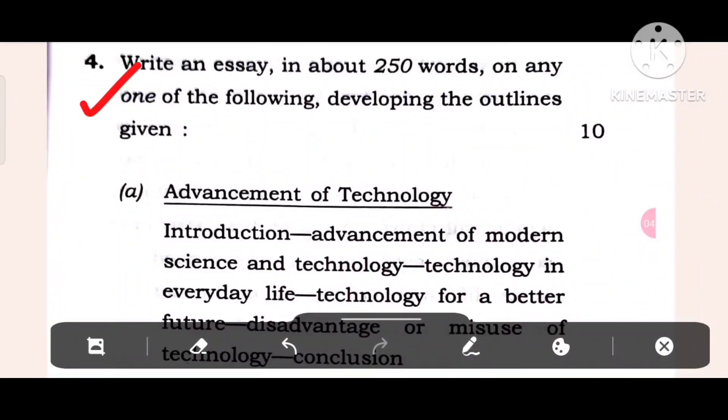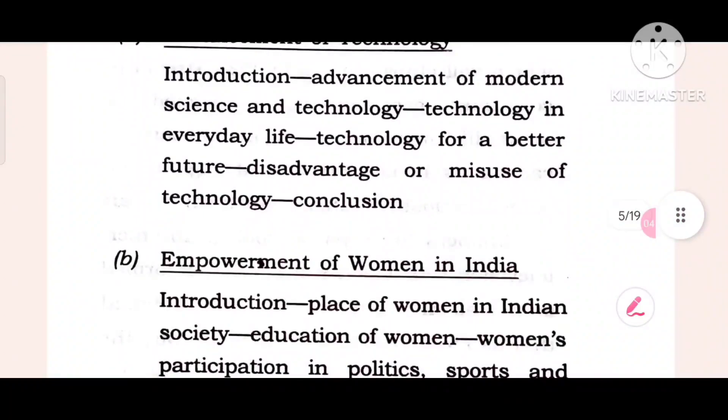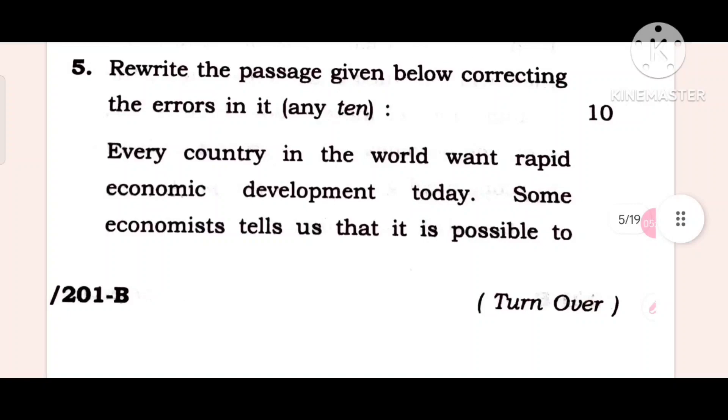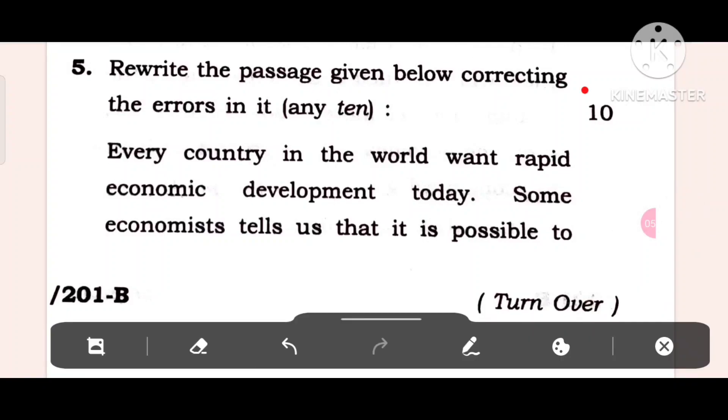Fourth question: Write an essay in about 250 words on any of the following, developing the outlines given. This is ten marks. Topics include advancement of technologies with introduction, or empowerment of women in India with introduction, place of women in Indian society, education of women, women's participation in politics and sports. If you write point-wise, you will get full marks. Then fifth question: Rewrite the passage given below correcting the errors. This is error correction, ten marks.